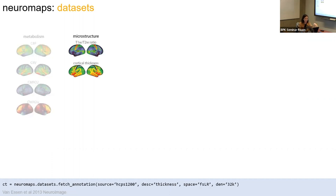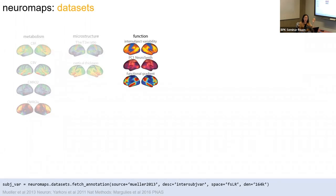Some metabolic maps, microstructural maps coming from MRI like T1/T2 ratio or cortical thickness, and functional maps like intersubject variability — that's variability in functional connectivity across a bunch of people. We label all the data based on the source it came from. In this case it's Muller et al. 2013, with a description, the space, and the density.